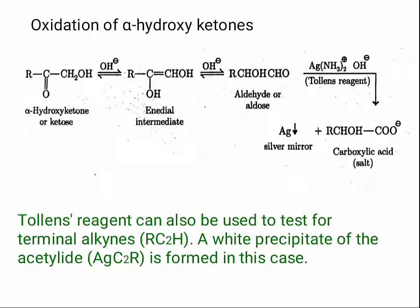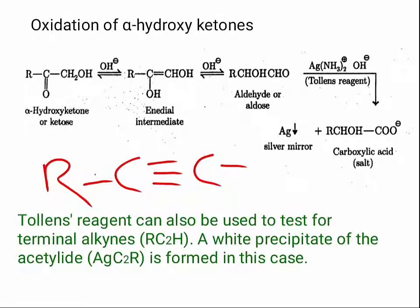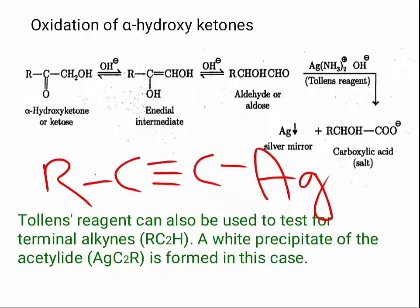Tollens' reagent can also be used to test for terminal alkynes — a white precipitate of the silver acetylide is formed in this case, which can give a false positive result. A terminal alkyne R–C≡C–H, when it reacts with Tollens' reagent, forms R–C≡C–Ag (silver acetylide), giving a false positive test.